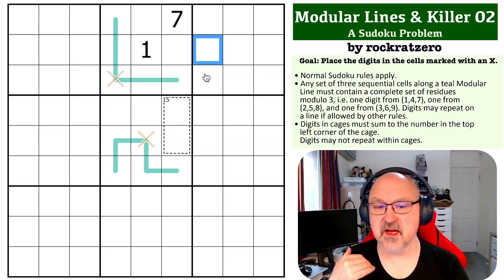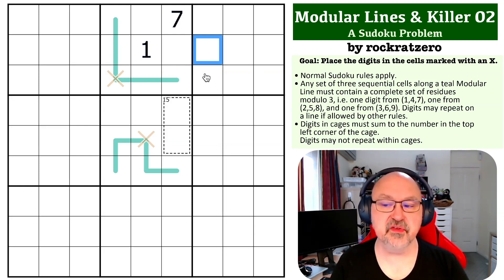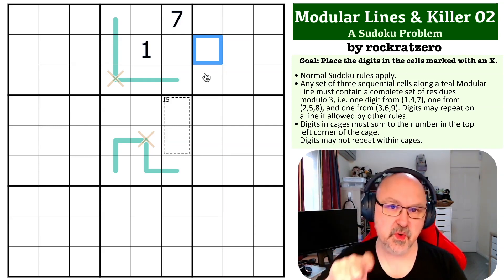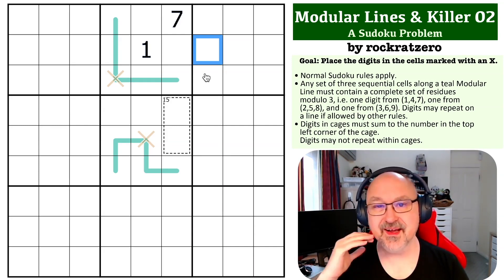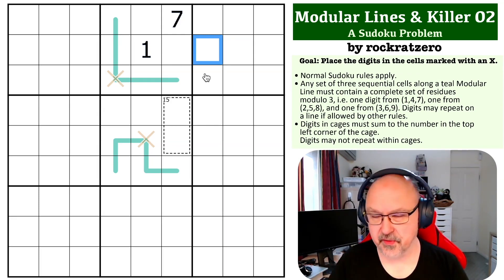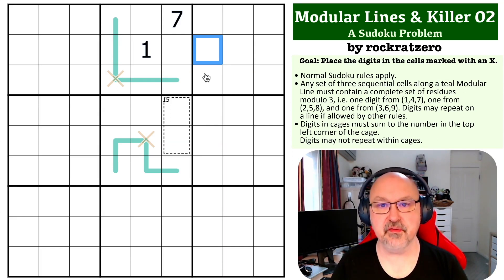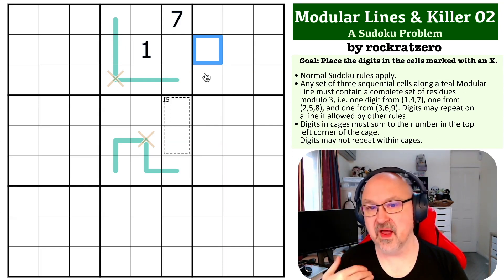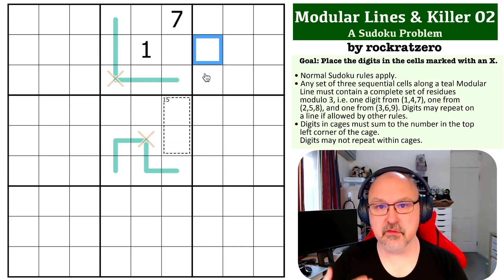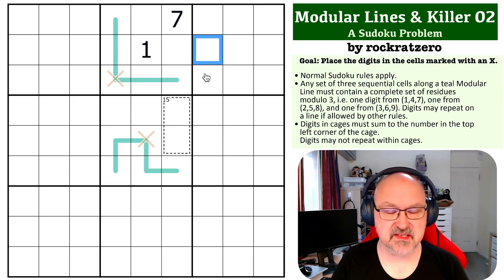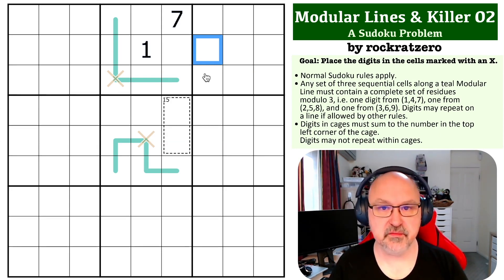Along modular lines, each sequence of three sequential cells will contain a complete set of residues modulo 3. That may not make sense, but it basically means one of the numbers, if you divide by three, will have a remainder of one, one will have a remainder of two, and one will have a remainder of zero. What it basically means is one will be from 147, one will be from 258, and one will be from 369.